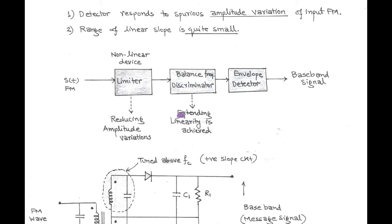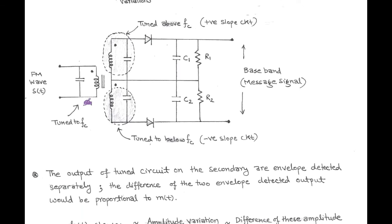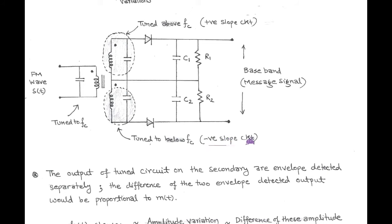This modified circuit is shown in the figure. In this, there are three tuned circuits: first at the input side of the transformer, which is tuned to the carrier frequency, and the others are at the output of the transformer. At the secondary side of the transformer, the upper tuned circuit is called the positive slope circuit and is tuned above the carrier frequency, while the lower tuned circuit is called the negative slope circuit and is tuned below the carrier frequency. Because of this tuning arrangement, we call it a balanced frequency discriminator.